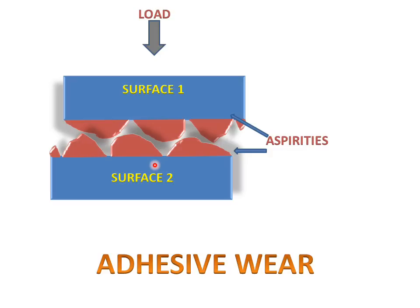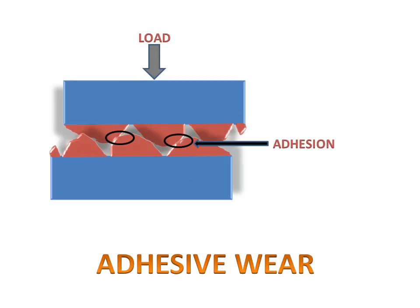By the contacting of these surfaces, the contacting surface area will create a cold weld junction — or we can say that they will bond with each other. And there we can see that there will be an adhesion. We will also call it a cold weld junction.